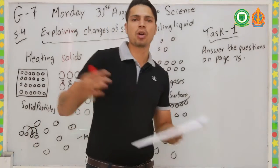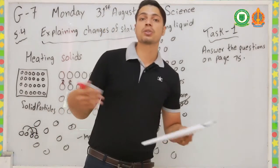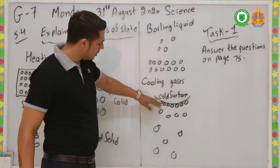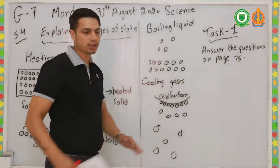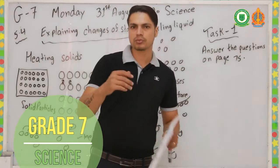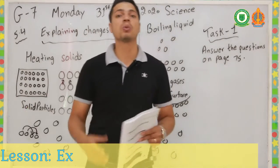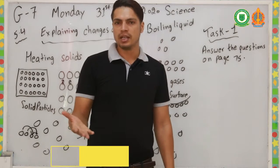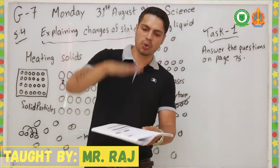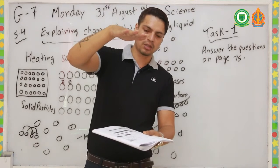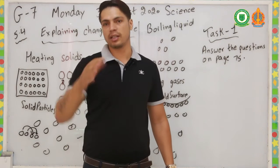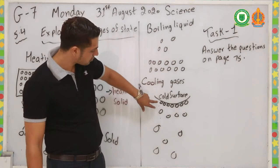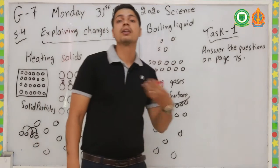Condensation means the change of a gas to a liquid. A good example you can do at home: boil some water and place something cold on top. You will see water droplets form on that surface. That means when the gas particles touch the cold surface, they lose energy, slow down, and become liquid again.